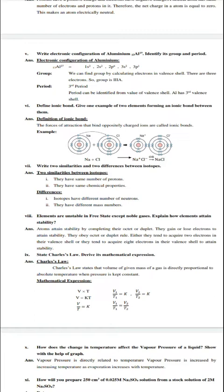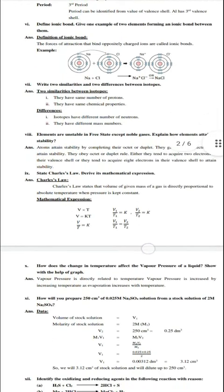Next question: State Charles law, derive its mathematical expression. Charles law states that volume of gas is directly proportional to absolute temperature when pressure is kept constant. Mathematical form: volume is directly proportional to temperature, so V is proportional to T, and V equals k times T. When we remove the proportionality sign, we get V over T equals k. This is the derived form.